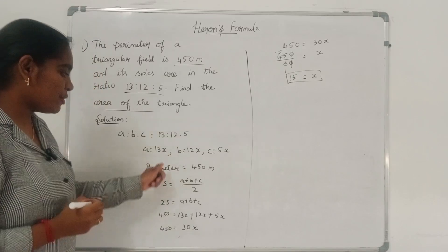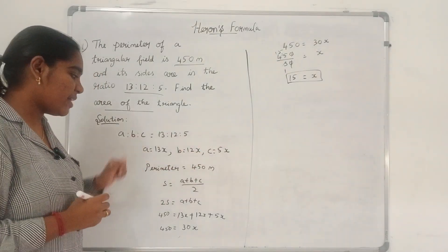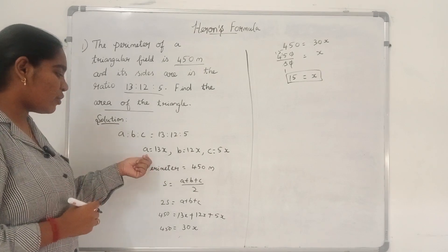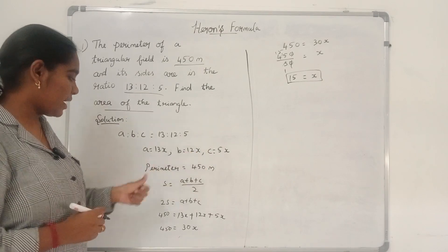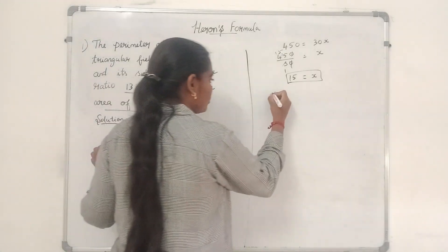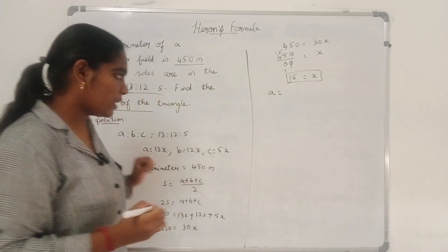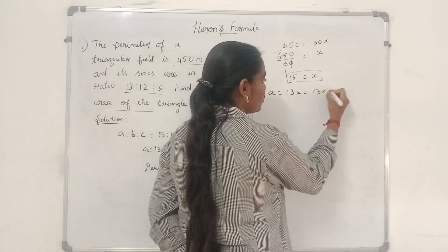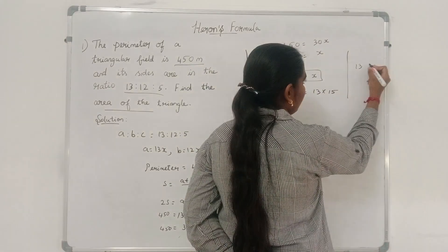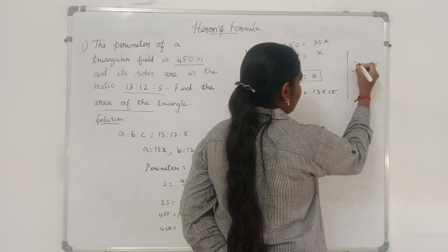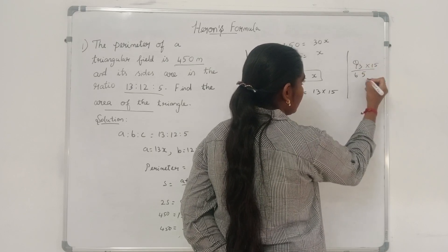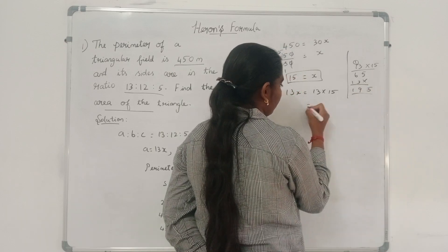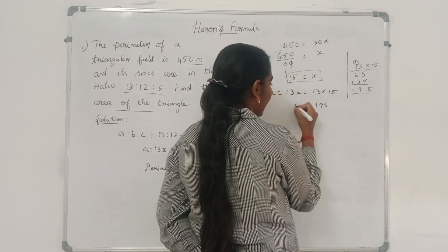Now we know the value of x. We found the value of x by using the perimeter. Next, we are going to find the value of each side. So a equal to 13x, which means 13 into 15, and the value of a is 195.